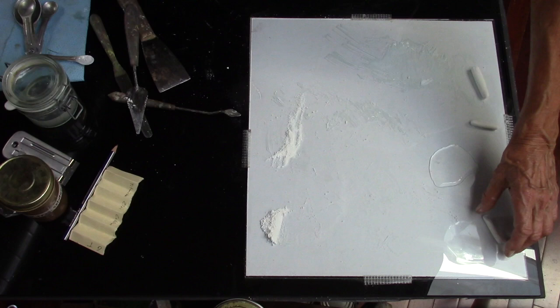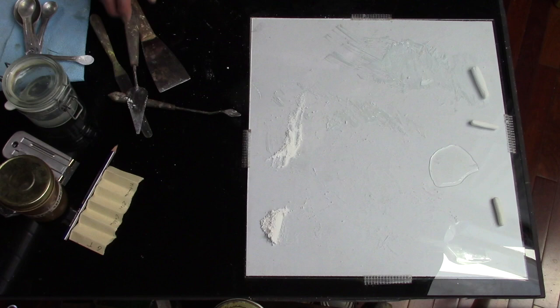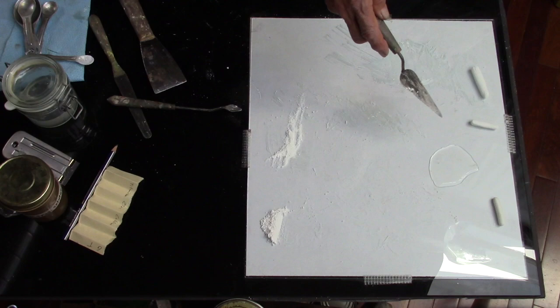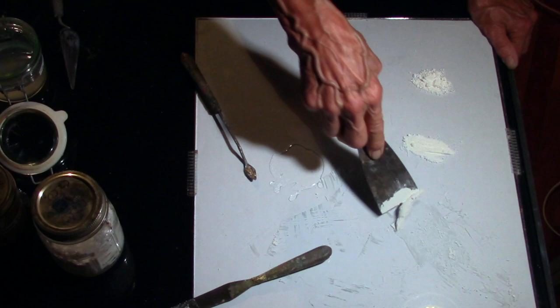So here we have our three gum tragacanth whites as binder for three different pastels, and we'll be making the same colors using methylcellulose. And then we'll compare them as drawing materials.